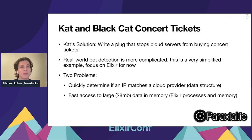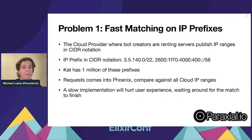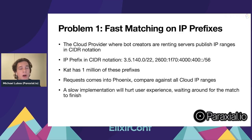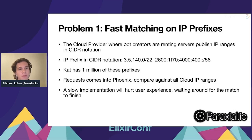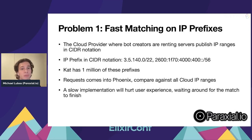Let's start with problem one — fast matching on IP prefixes. Cat knows all of the IP prefixes for the cloud provider's public IP ranges, published in CIDR notation. For example, IPv4: 35.140.0.0/22, and there's an IPv6 one starting with 2600. Cat has a million of these prefixes, and a slow implementation will hurt user experience, so performance is something we really care about here.